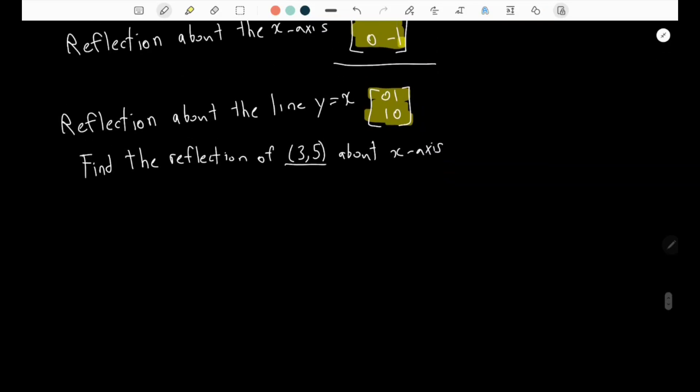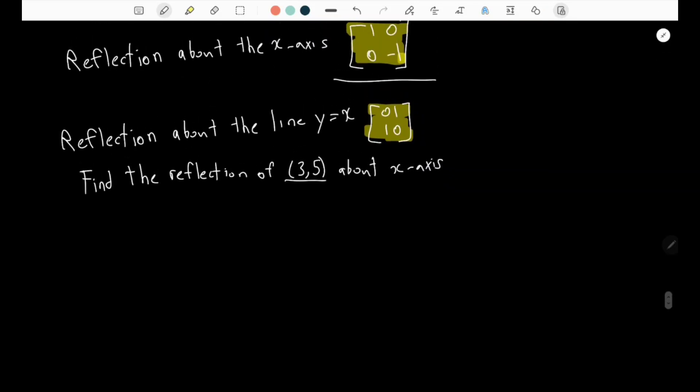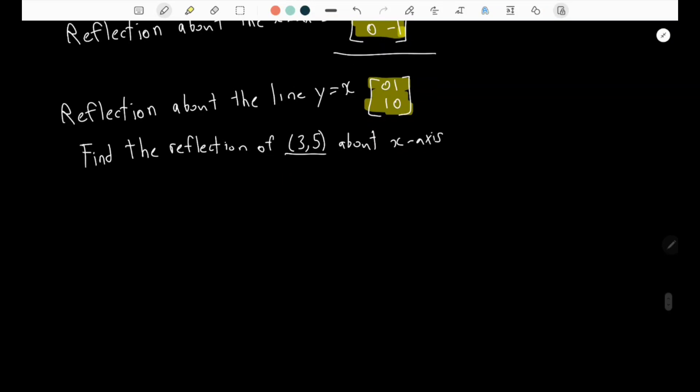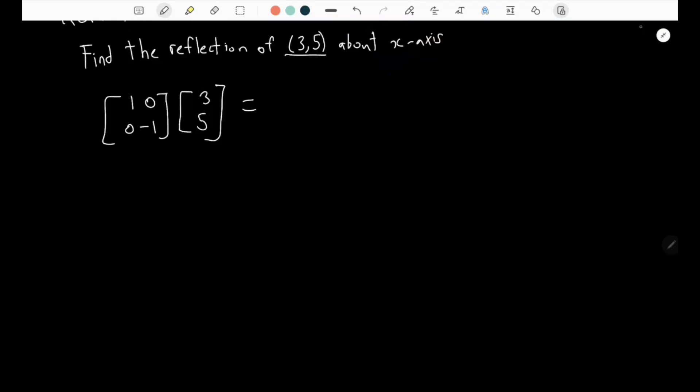What we just do is multiply this x-axis matrix with the matrix given in the question. So let's do that now. This is the answer, and simplified it will give you [3, -3, -5].